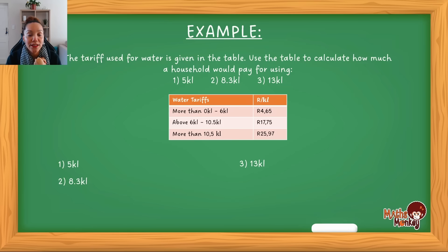So we're going to look at this example. And then I'm going to show you how you actually do the calculations for this. So the example says, the tariff used for water is given in the table. Use the table to calculate how much a household would pay for using 5 kiloliters, 8.3 kiloliters and 13 kiloliters. So we're looking at this as if this household used this total for the month. So if we look at this, in the left hand side of the table, you will see that this is the amount of kiloliters and on the right is how much is charged per kiloliter.